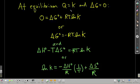At equilibrium, Q is equal to K. And equilibrium means delta G is equal to zero. So we can say zero equals delta G zero plus RT ln K. Rearranging a little bit, we get delta G zero equals negative RT ln K. We have a relationship between delta G zero and our equilibrium constant.